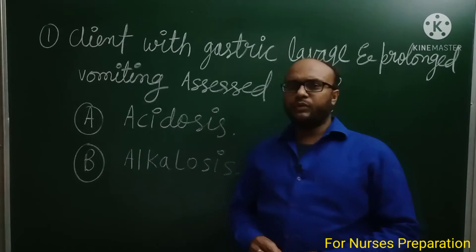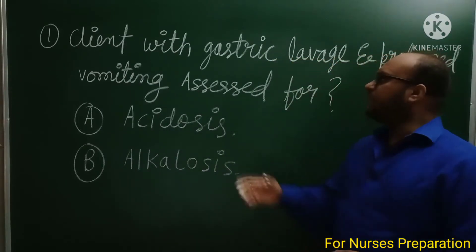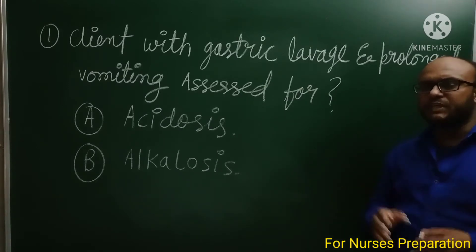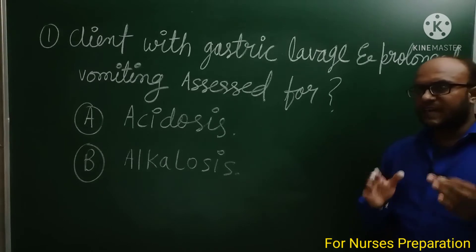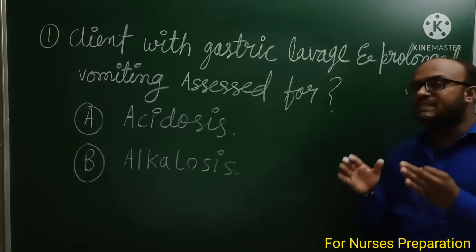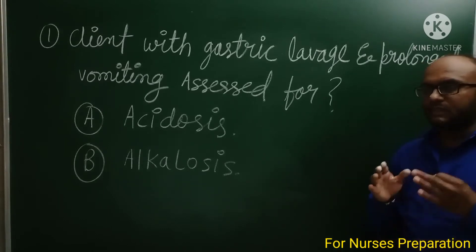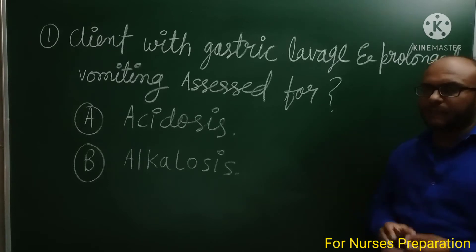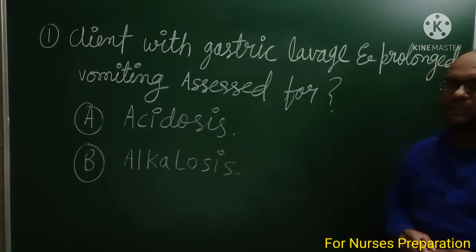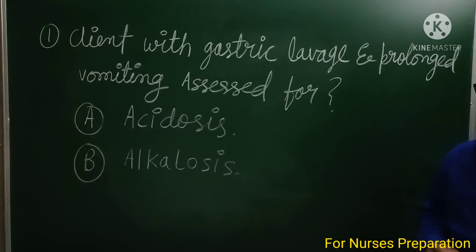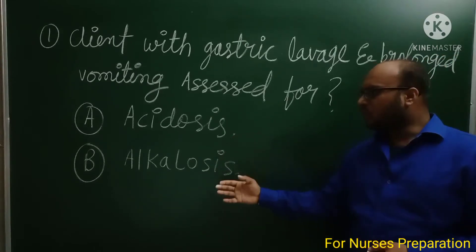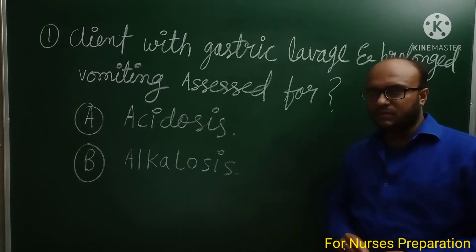Question number one. A client with gastric lavage and prolonged vomiting is assessed for which condition. Option A: Acidosis. Option B: Alkalosis.